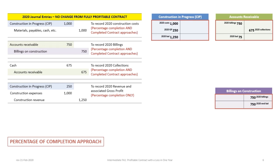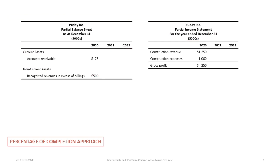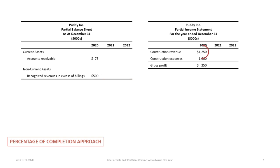If we review the journal entries for 2020, there is no change from the previous tutorial because the estimated cost to complete changed in 2021. So all of these journal entries are still the same and are posted to our T-accounts. Here is our $1 million in costs, our gross profit of $250,000, and the billings and the accounts receivable. In terms of the presentation of our balance sheet and income statement for 2020, these stay exactly the same — accounts receivable balance of $75,000, recognized revenues in excess of billings of $500,000, construction revenue of $1.25 million, and construction expense of $1 million giving gross profit of $250,000.